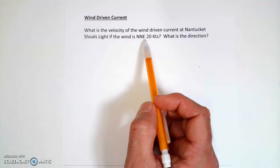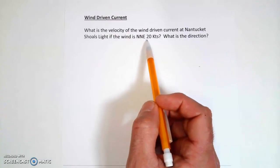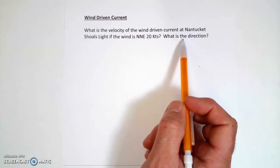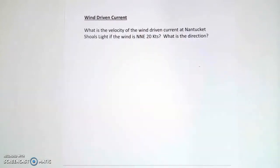So we're going to use one table to calculate the speed of the current, the approximate speed, and then we're going to use the other table to calculate the direction.